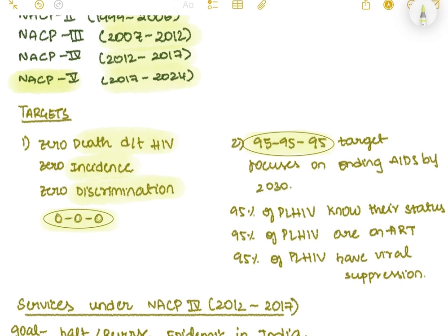The second target is the 95-95-95 target, which focuses on ending AIDS by 2030. Here, 95% of people living with HIV should know their status, 95% should be on ART therapy, and 95% should achieve viral suppression through that ART therapy.